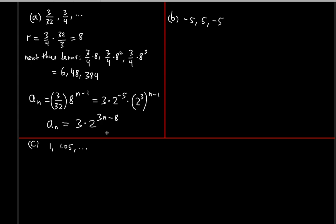You might say this doesn't look like it starts at 3/32, but when n = 1, 2^(3−8) = 2^(−5) = 1/32, so you do get 3/32 for the first term. The different power of 2 compensates for the fact that we no longer have the fraction written explicitly. This simplified form is equivalent but looks much neater.